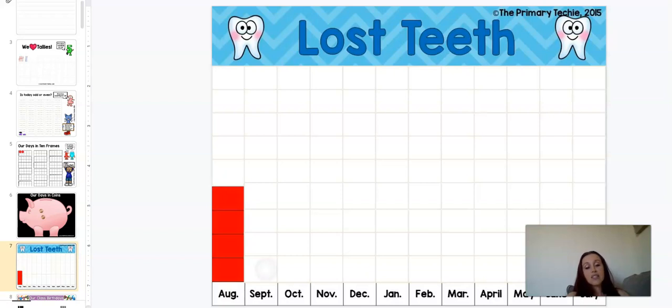And then September, you'll move over to the next spot, and now we're working with orange. So it makes a nice visual of the bar graph.